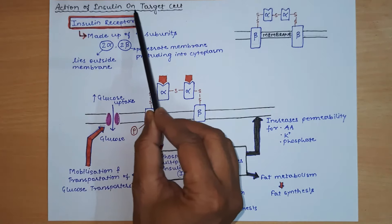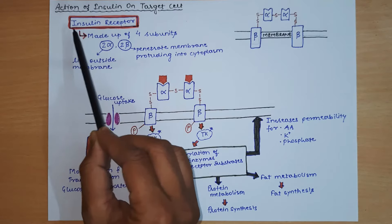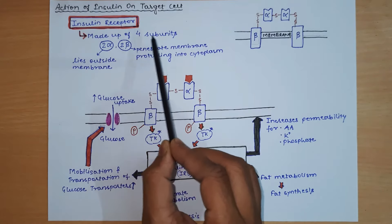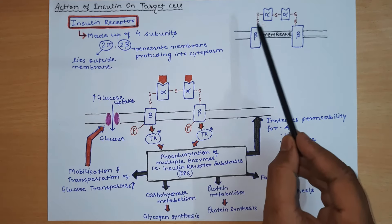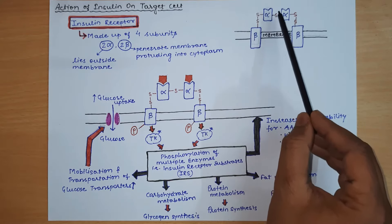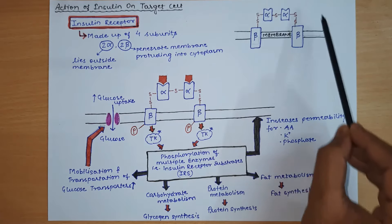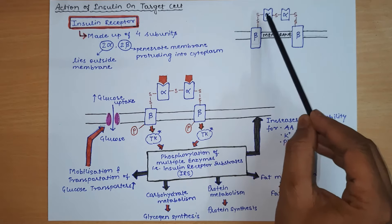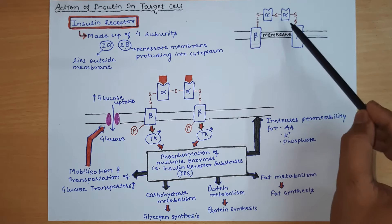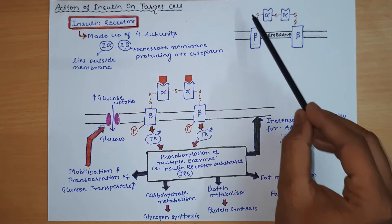The action of insulin on target cells occurs through insulin receptors. The insulin receptor has 4 subunits: 2 alpha subunits and 2 beta subunits. The alpha subunits lie outside the membrane, while the 2 beta subunits penetrate the membrane and protrude into the cytoplasm. The alpha and beta subunits are connected by disulfide linkages.